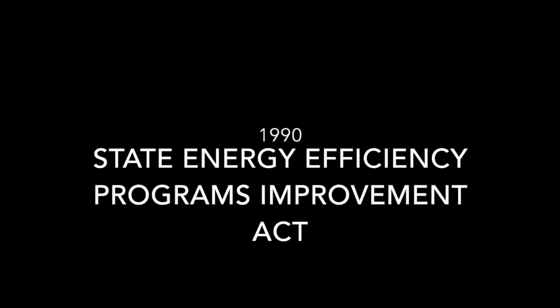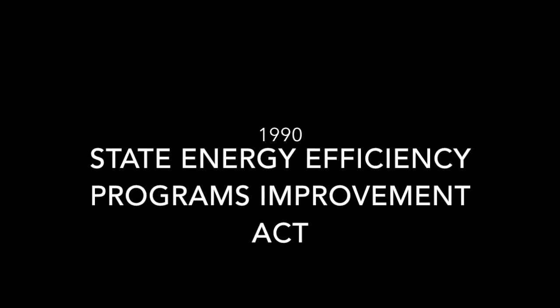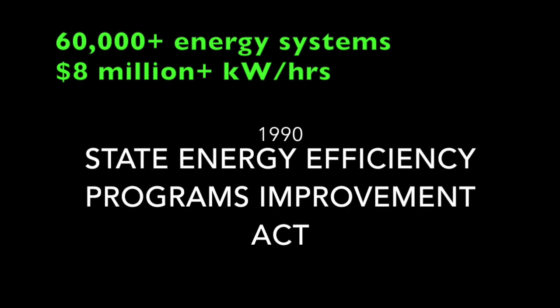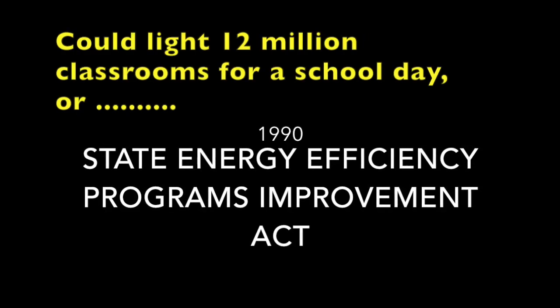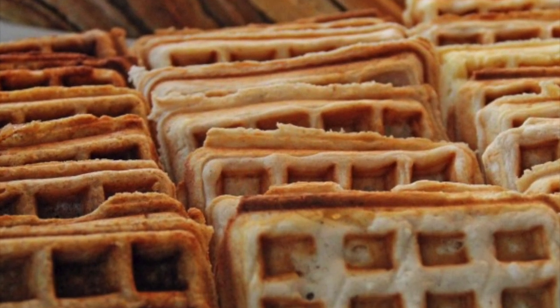The State Energy Efficiency Programs Improvement Act of 1990 sought to partner with states. Programs started by this legislation led to the installation of more than 60,000 renewable energy systems, generating more than 8 million kilowatt hours — enough to light nearly 12 million classrooms for an average school day of 6.7 hours.